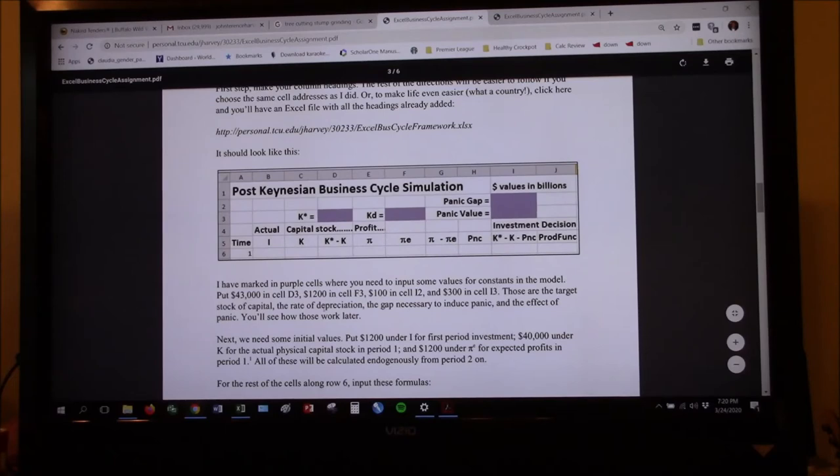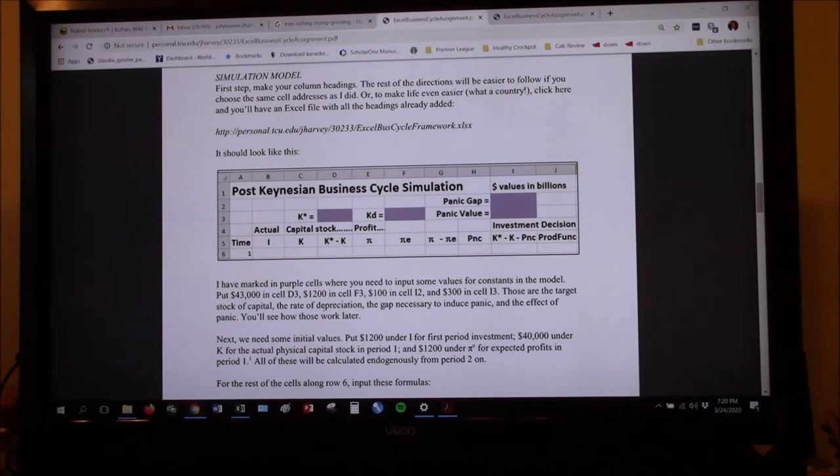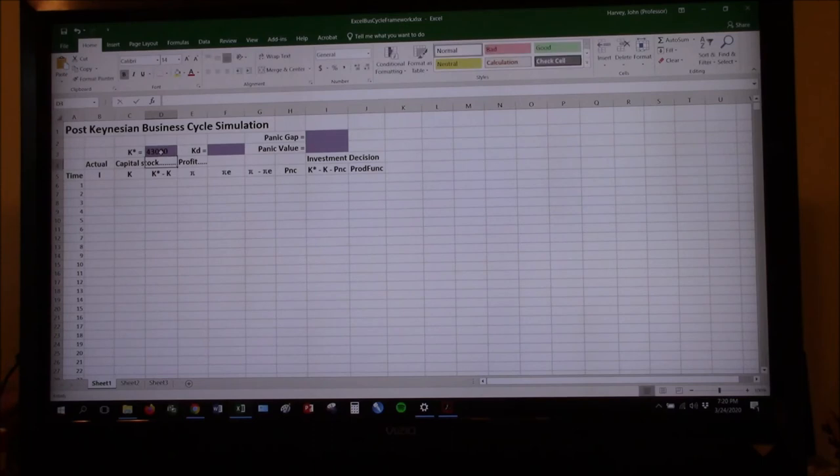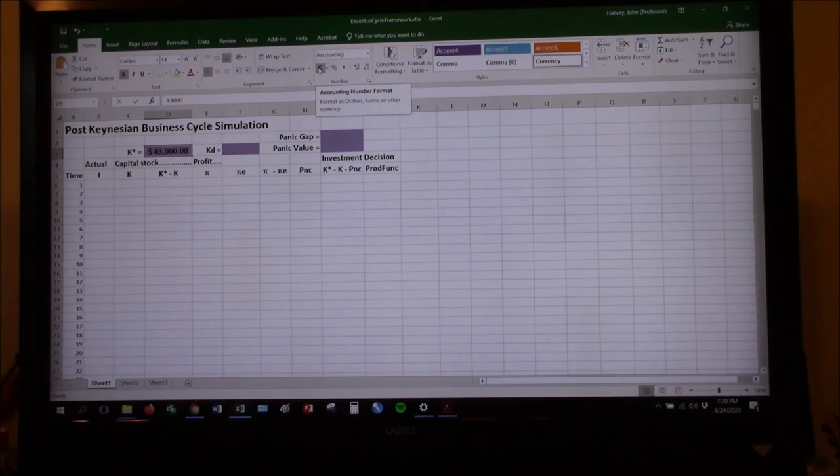I have marked in purple cells where you need to input some values for constants in the model. Put 43,000 in cell D3. Now, let's do that. Cell D3 is right there. And if you want to, you can put in here. Oh, good Lord. Here it is. Click. Make it a dollar value. You can click on that dollar sign right here under number. And it will make that a dollar value. And I don't know. It feels a little better to do that.